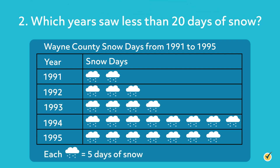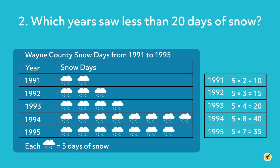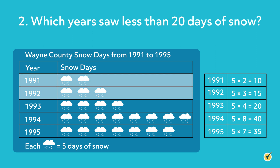Which years saw less than 20 days of snow? To answer this question, we need to figure out how many snow days each year had altogether. Remember that each symbol represents 5 snow days. We can multiply 5 times the number of symbols for each year to find the total amount of snow days for that year. Based on our calculations, 1991 and 1992 saw less than 20 days of snow.